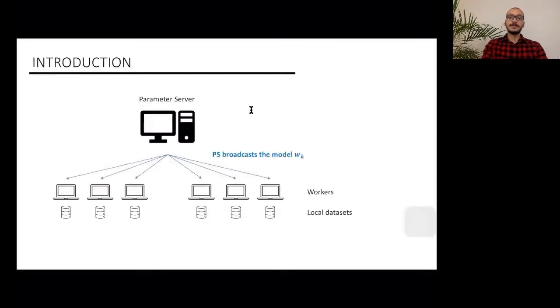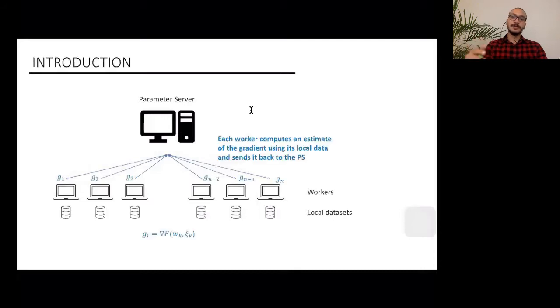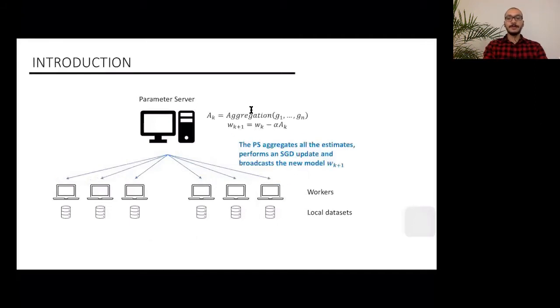If we consider stochastic gradient optimization, suppose that you are in iteration number k. First, the PS broadcasts the model wk to all the workers. Then each worker computes an estimate of the gradient using this model and its local dataset, and sends it back to the PS. Finally, the PS aggregates all these received estimates of the gradient and performs an update. This operation starts again until a certain criterion is met.